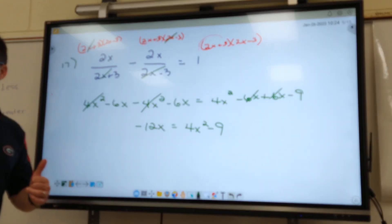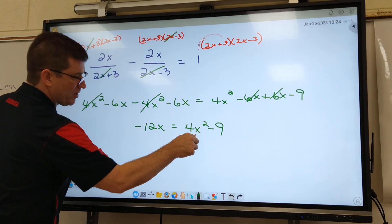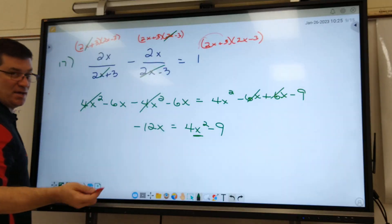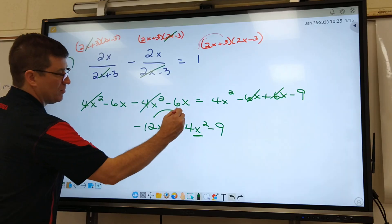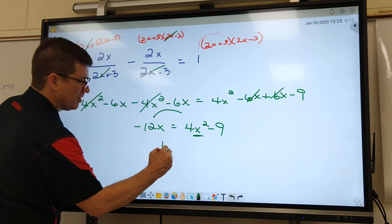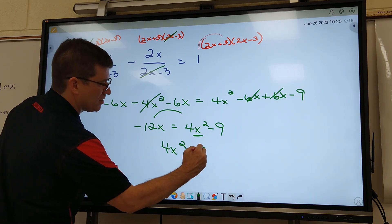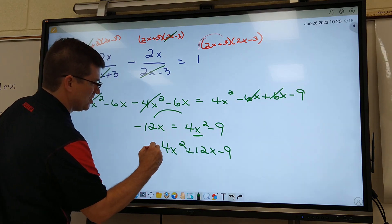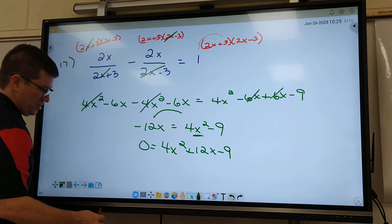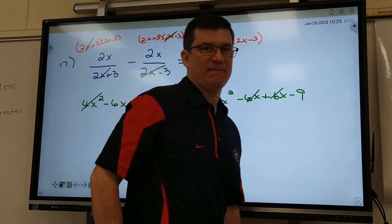We're good? Do I have an X squared in the problem? Yes, so I'm going to have to do quadratic formula. I've got to move this over: I got 4X squared plus 12X minus 9 equals 0. Do quadratic formula on that and see what you get.